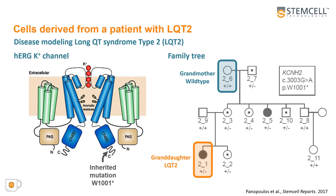We next wanted to model the long QT type 2 syndrome using patient-derived IPS lines and the STEMdiff cardiomyocyte system. We obtained the IPS lines from the Fraser lab at UCSD. This family has a heterozygous point mutation in the distal C-terminus of the HERG ion channel, which results in an early stop codon. We obtained the unaffected grandmother, 2-6, and the affected granddaughter, 2-1.